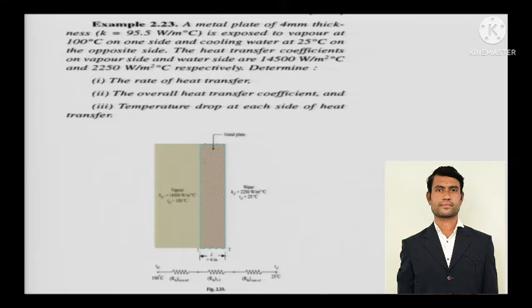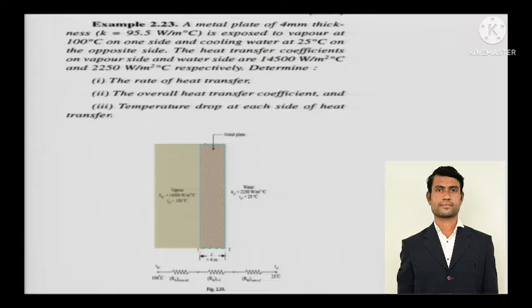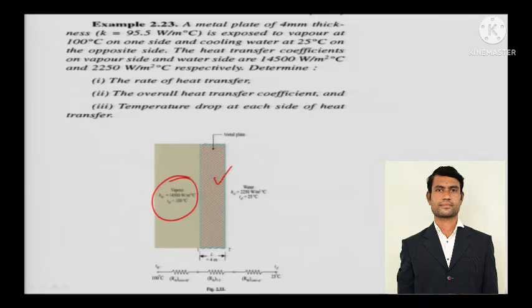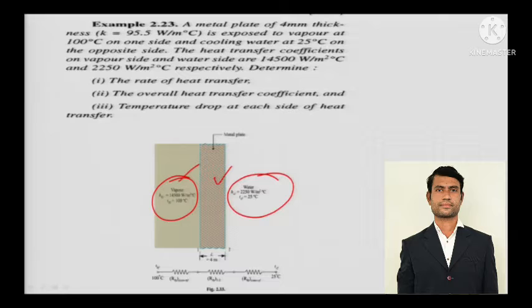As you can see in the diagram, there are two composite walls — two materials joined together forming one composite wall. The metallic plate of 4 mm thickness is exposed to vapor at 100°C on one side. On the other side is cooling water at 25°C, so one side is vapor and the other side is water.